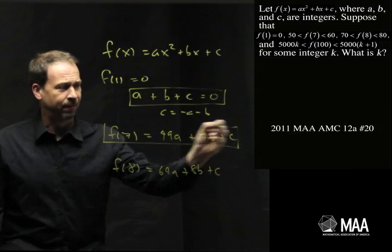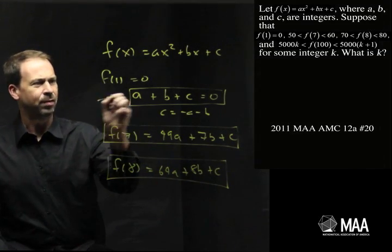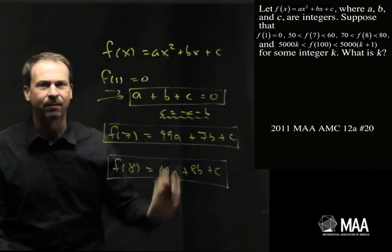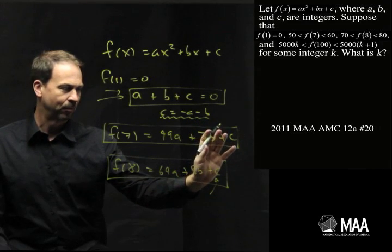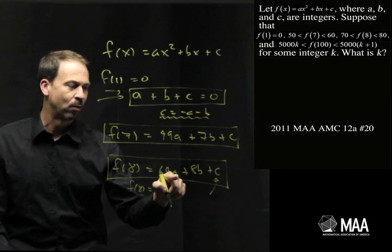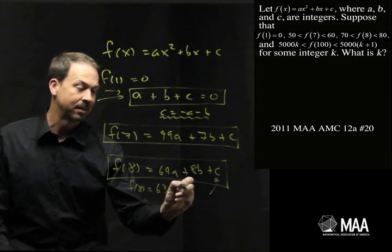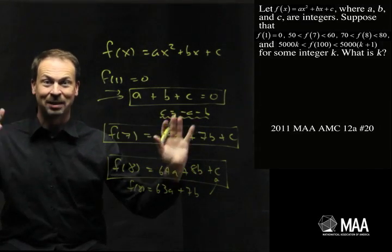Alright, so let's look at this. This is a number in the 50s. Apparently, this is a number in the 70s. I've got this piece of information. Actually, let's look at this. c is negative a minus b. Let's just shove it into one of these, so I can read this one right here. So, c is negative a minus b. That's telling me f(8) is actually 64a plus 8b minus a minus b. That's 63a and 7b. Still don't know where I'm going. I'm just doing something.